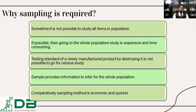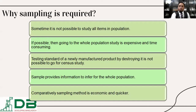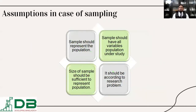Comparative to census, the sampling method is economic and quicker. If you go for a 170 million population study, it would be time-consuming and resource-intensive. But studying 500 people based on selected criteria and collecting data from those 500 people is much easier, economically less costly, and from a timeframe perspective it is quicker.